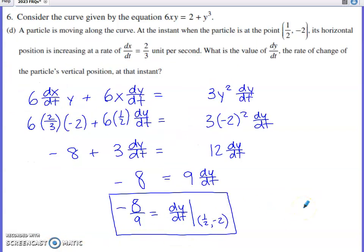Last part of this is a little related rates question to finish it up. They tell us the particle is moving along the curve, and at the instant when the particle is at the point one-half comma negative 2, its horizontal position is increasing at a rate of dx/dt equals two-thirds units per second. So dx/dt is two-thirds at this particular time. We want to know the value of dy/dt, the rate of change of the particle's vertical position, at that same time.